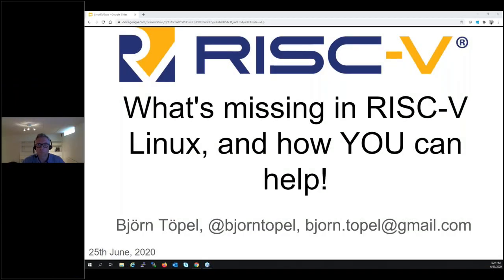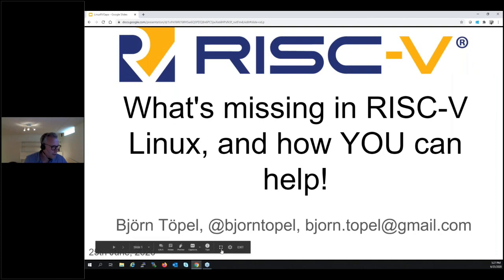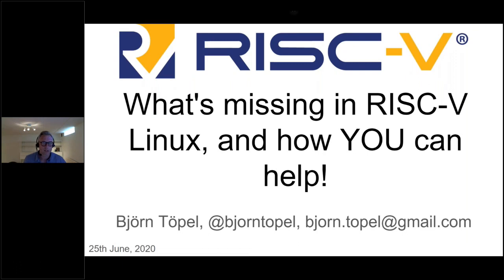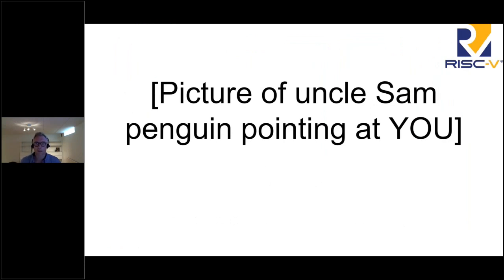Next presentation: Bjorn introduces himself. He works for a large chip company and all his RISC-V work is done as a hobby. He maintains the RISC-V eBPF JIT and also something called AF_XDP — a fast-path socket for raw Ethernet frames, which is his work at Intel. He also does a lot of networking work from a kernel perspective and hosts the Swedish RISC-V meetup. The topic today is: what's missing in RISC-V Linux and how you can help out. This is not a super technical talk but more of an inspirational one — how to find an interesting Linux project to work on within the scope of RISC-V.